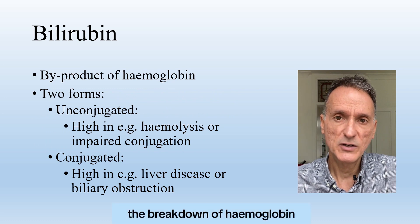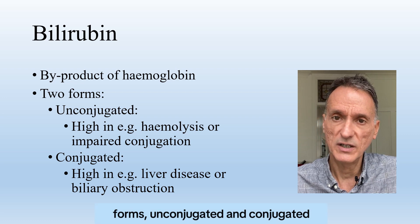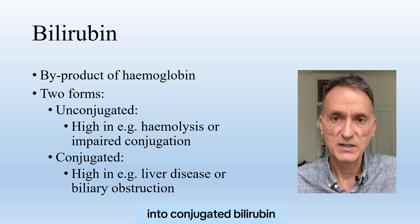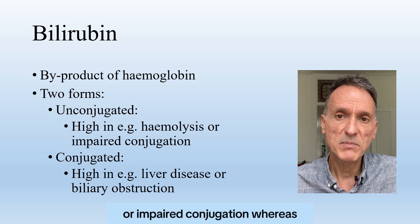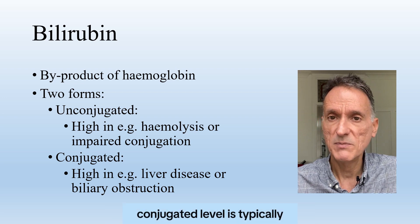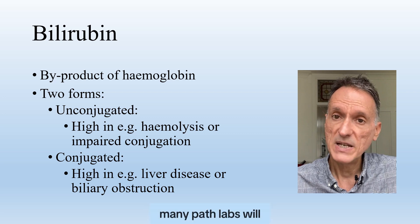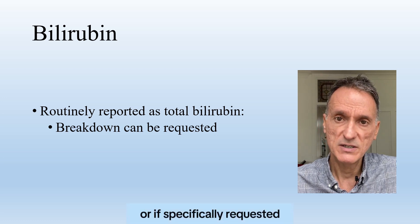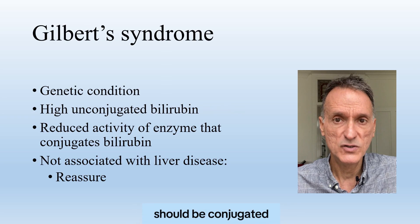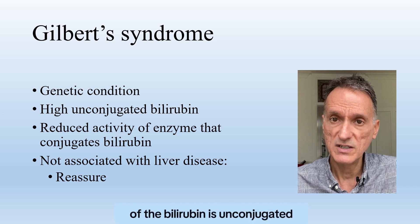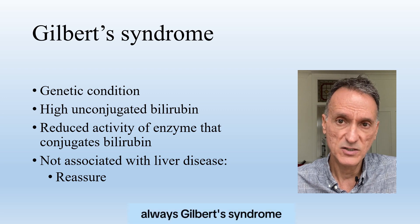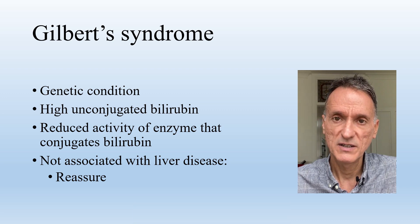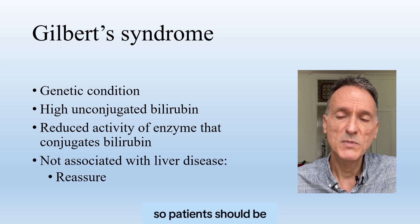Bilirubin is the byproduct of the breakdown of haemoglobin. It exists in two forms: unconjugated and conjugated. Bilirubin is transported to the liver as unconjugated bilirubin, where it is converted into conjugated bilirubin. A high unconjugated level is usually due to haemolysis or impaired conjugation, whereas a high conjugated level is typically due to liver disease or biliary obstruction. Many path labs will routinely report just total bilirubin, but will give a breakdown if the level is abnormal or specifically requested. In normal circumstances, the majority of bilirubin should be conjugated. So if the majority is unconjugated, then in the absence of haemolysis, the cause is almost always Gilbert's syndrome, where the enzyme that conjugates bilirubin has a reduced activity, with a consequent rise in unconjugated bilirubin. It is not associated with liver disease or poor health, so patients should be fully reassured.